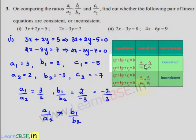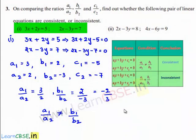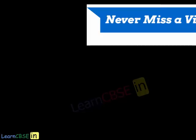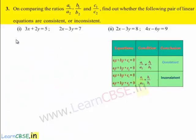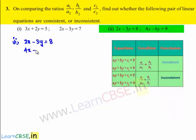By using the first condition, if a1 by a2 is not equal to b1 by b2, we say that the given set of linear equations are consistent. Therefore, the given equations 3x plus 2y is equal to 5 and 2x minus 3y is equal to 7 are consistent.